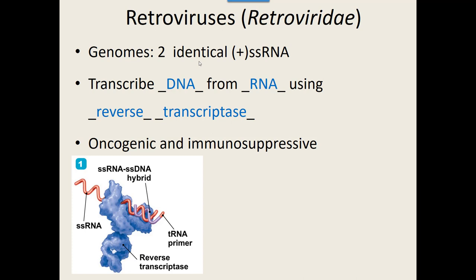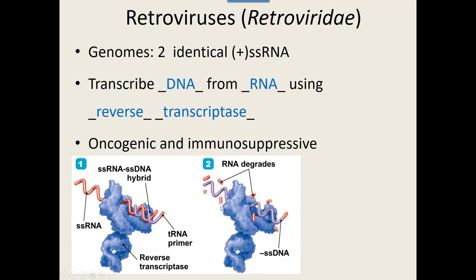There are two groups: oncogenic retroviruses, which are cancer-causing, and immunosuppressive retroviruses. The reverse transcriptase enzyme takes the single strand of RNA and copies it as DNA — bringing in A's, T's, C's, and G's instead of A's, U's, C's, and G's. It then gets rid of the original single-stranded RNA, uses that first DNA strand as a template to make the complementary strand, and you end up with double-stranded DNA from a single-stranded RNA.